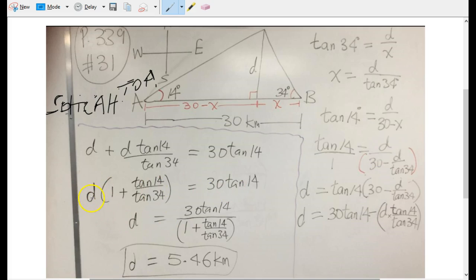This has helped us to isolate d. D is multiplying this whole quantity, so to solve for d we can divide both sides by this whole quantity. So we take 30 tan 14 divided by this whole quantity. If you plug it correctly into your calculator you get the answer.